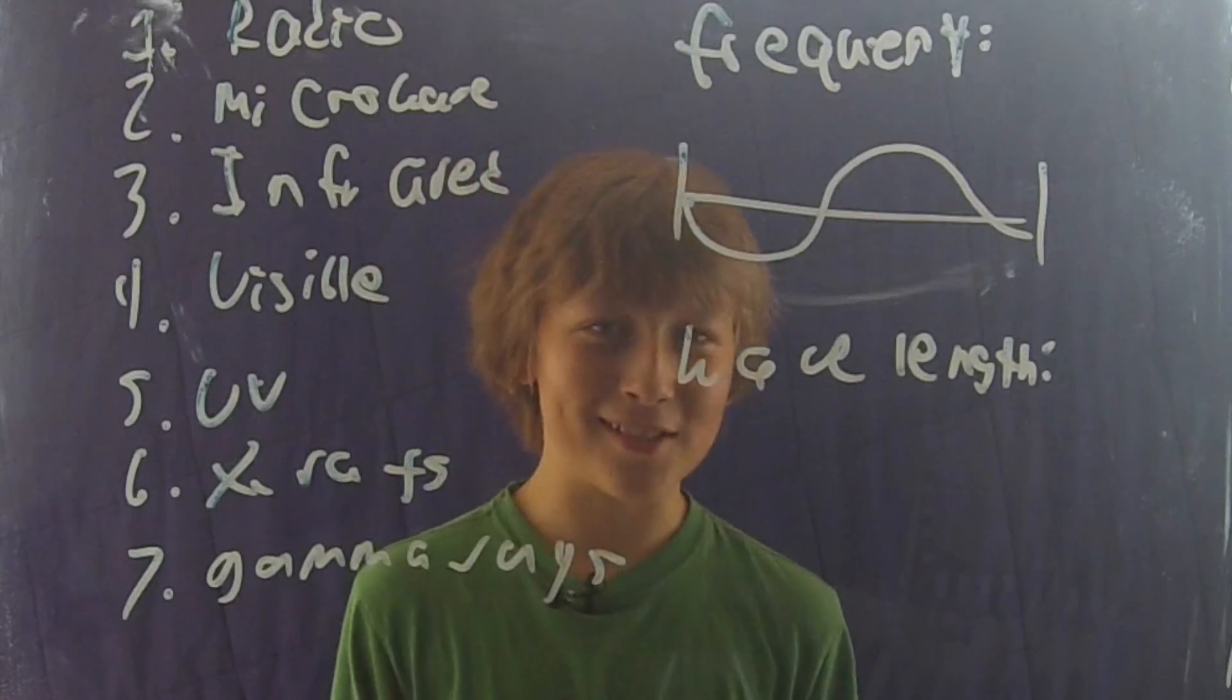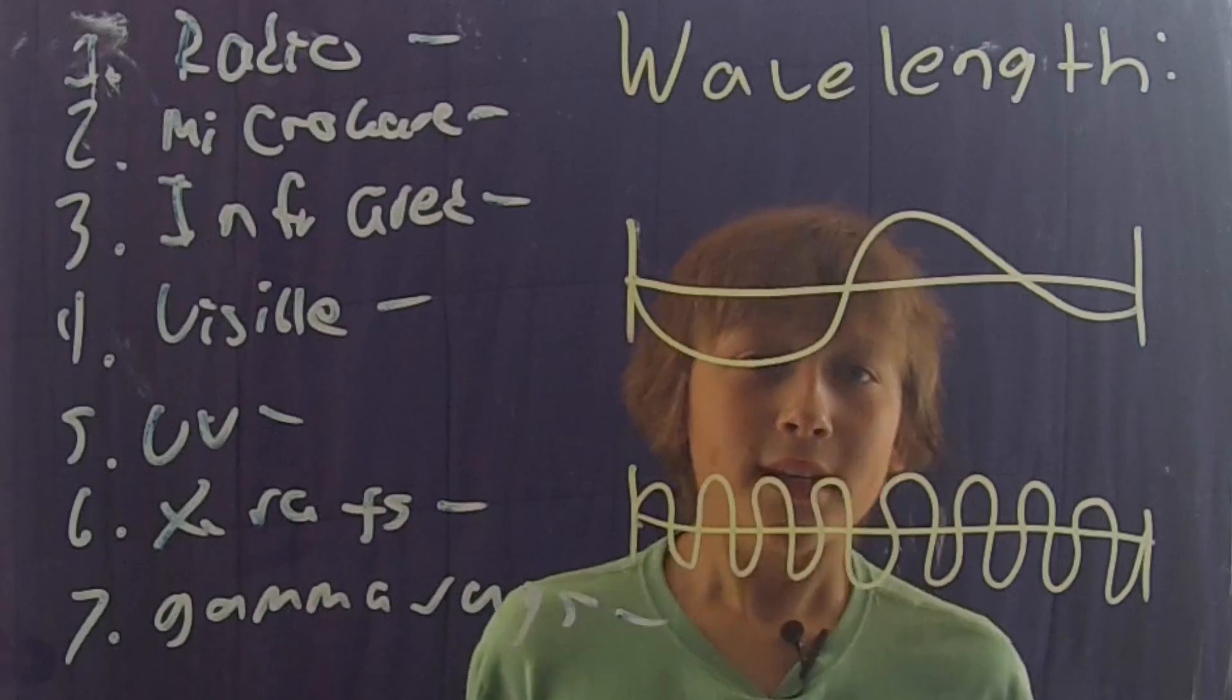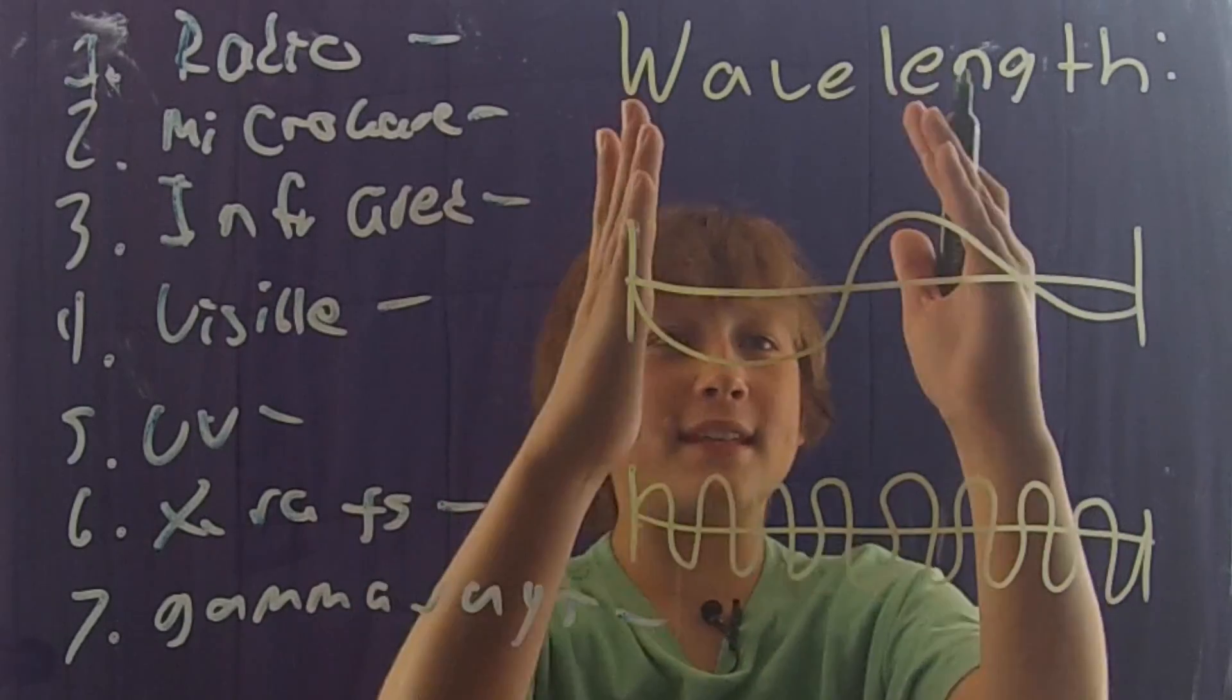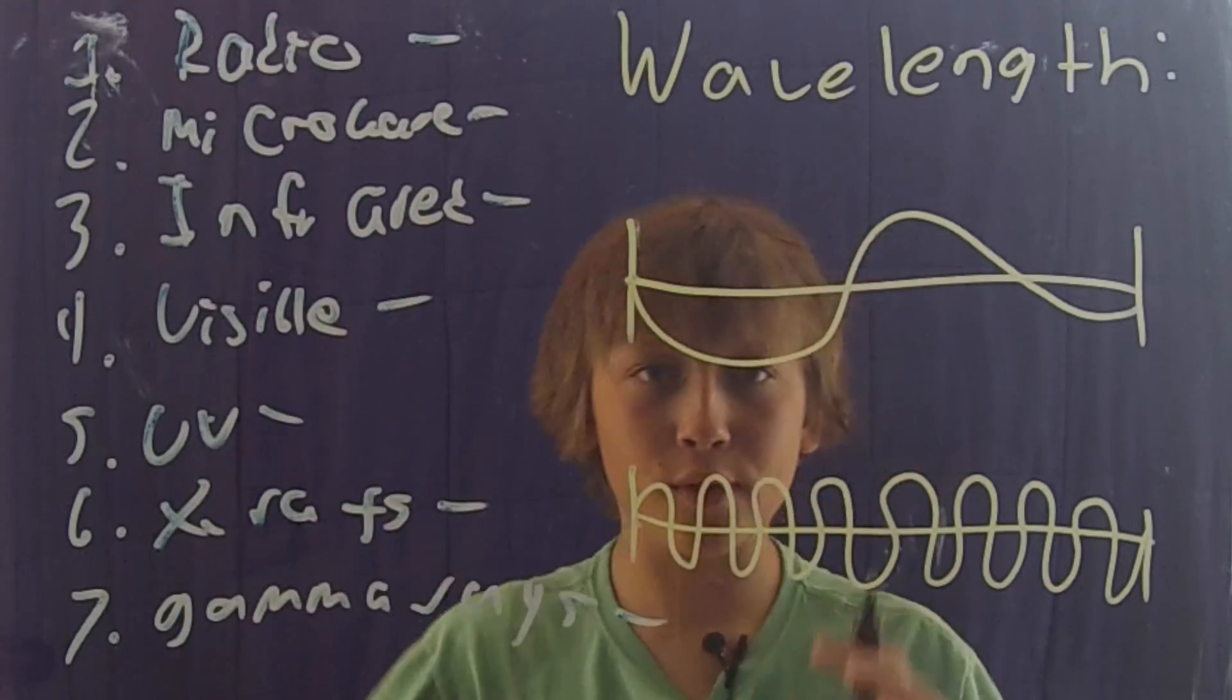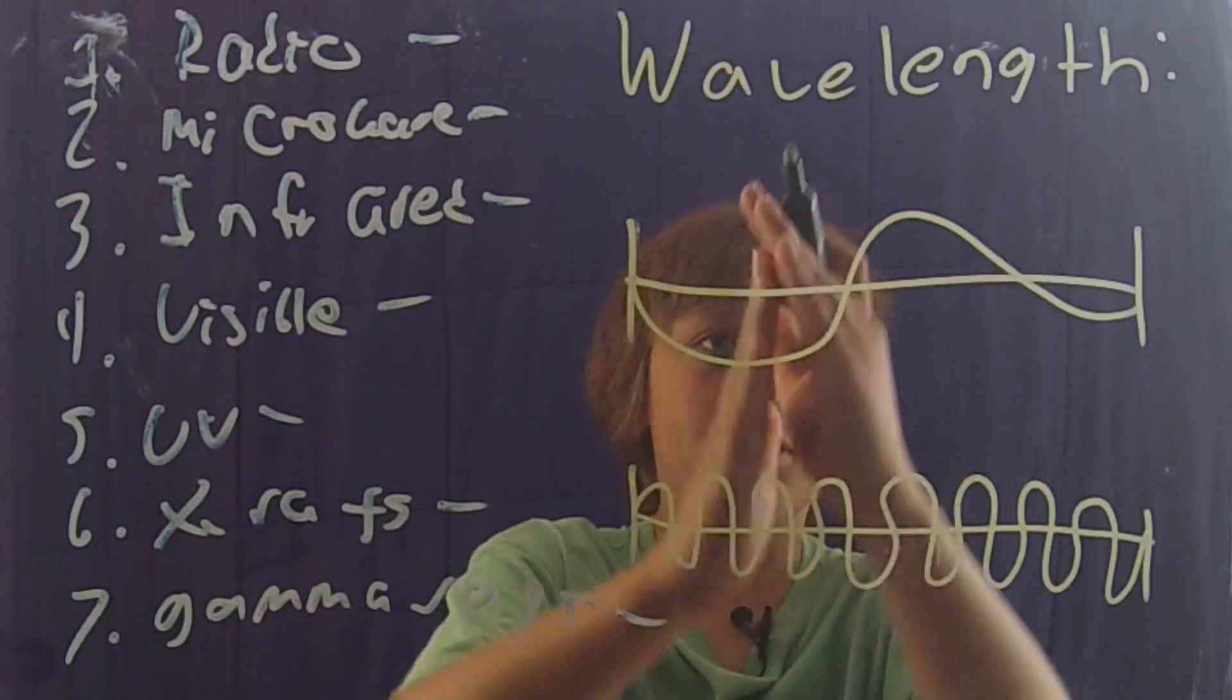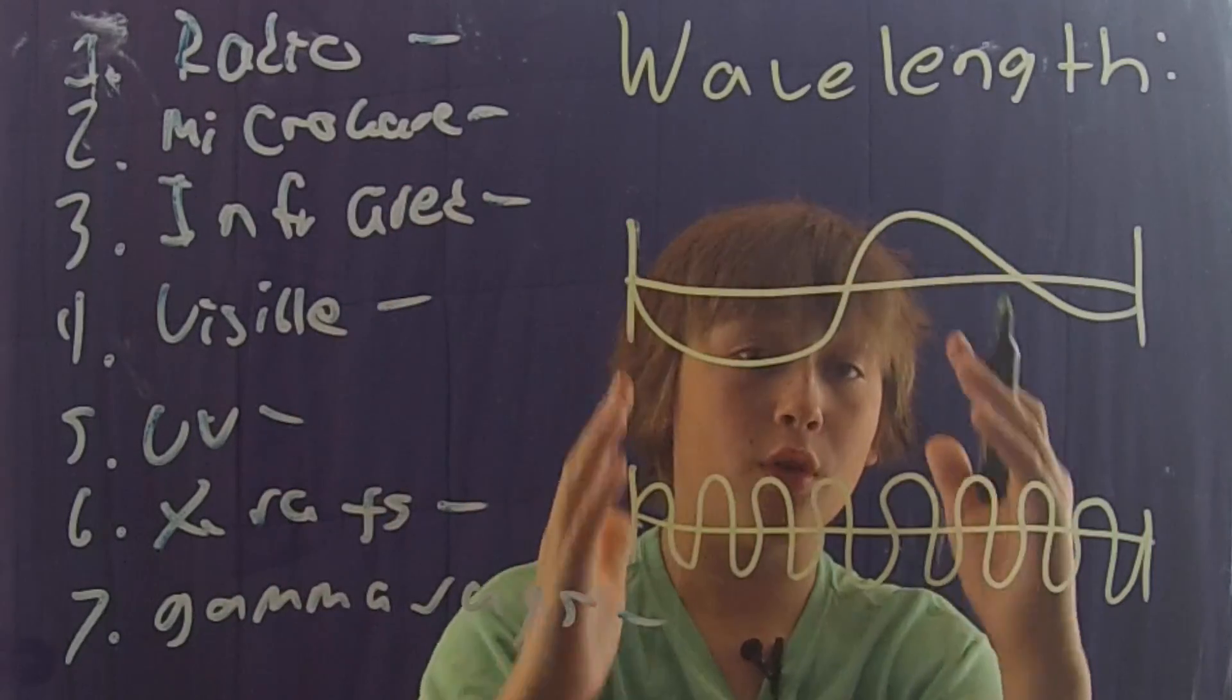Wavelength is simply just the length of the wave. As you can see here for wavelength the distance between the wave is great and here it's very tiny. Wavelength and frequency go hand in hand. The longer the wavelength the lower the frequency.